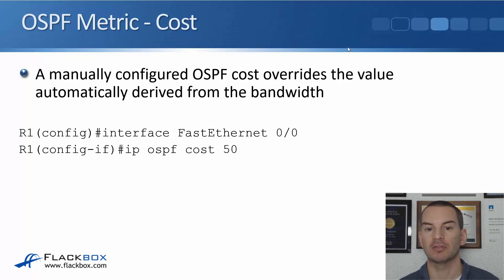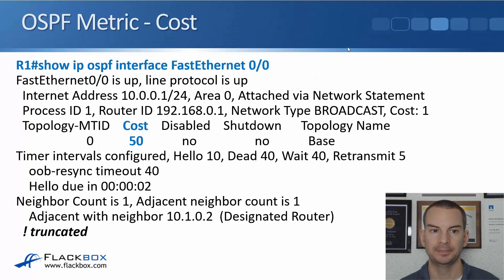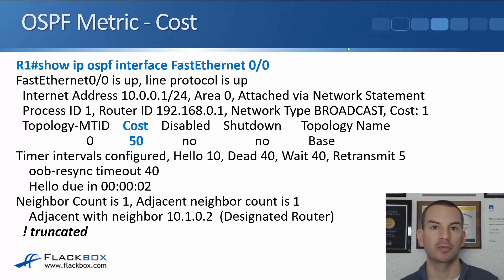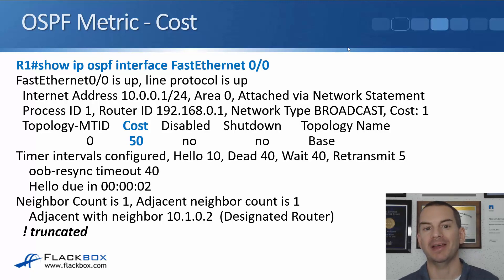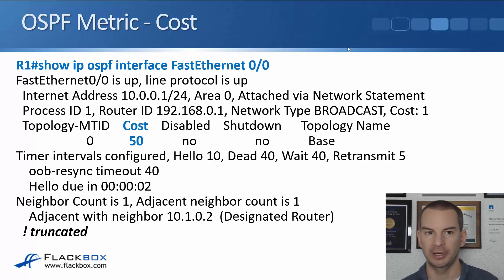To directly set the OSPF cost on an interface, go into interface config and use 'ip ospf cost 50'. To verify the cost on a link, use 'show ip ospf interface'. You can specify an individual interface to limit the output, or use 'show ip ospf interface brief' to get a concise summary showing the cost on all interfaces.